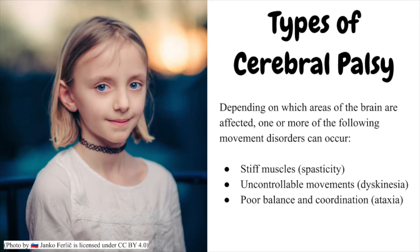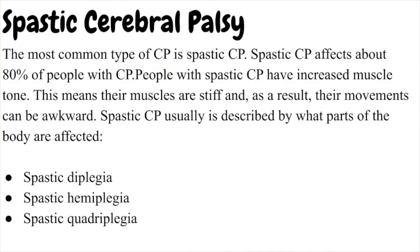Types of cerebral palsy. Doctors classify CP according to the main type of movement disorder involved. Depending on which areas of the brain are affected, one or more of the following can occur: stiff muscles (spasticity), uncontrollable movements (dyskinesia), or poor balance and coordination (ataxia). The most common type is spastic CP, affecting about 80% of people with CP. People with spastic CP have increased muscle tone, meaning their muscles are stiff and their movements can be awkward.